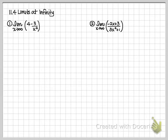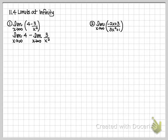Let's go ahead and separate this out. We'll do the limit as x approaches infinity of the first value, which is the constant 4, and then minus the limit as x approaches infinity of the second value, which is 3 over x squared. We know from previous sections that the limit of a constant is just that constant, so this limit is still going to be 4.